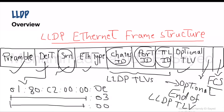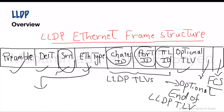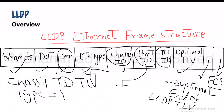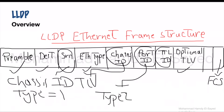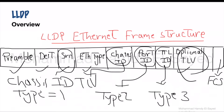The source MAC address is the MAC address of the source interface from which the LLDP frame is transmitted. Ether type is 0x88CC. Chassis ID is type 1, port ID TLV is type 2, TTL TLV is type 3. The LLDP frame starts with the mandatory TLVs: chassis ID, port ID, and time-to-live TLV. The mandatory TLVs can be followed by any number of optional TLVs.